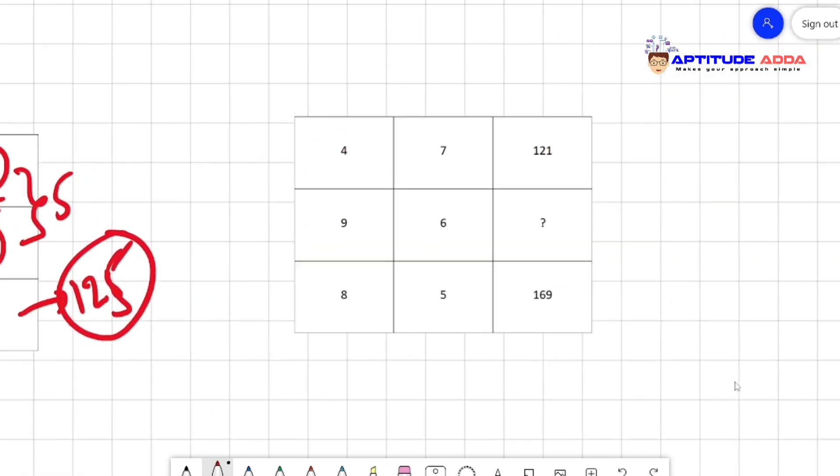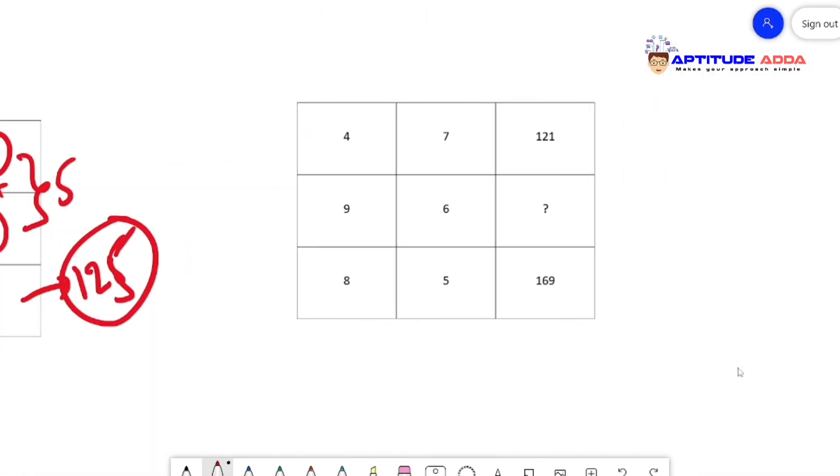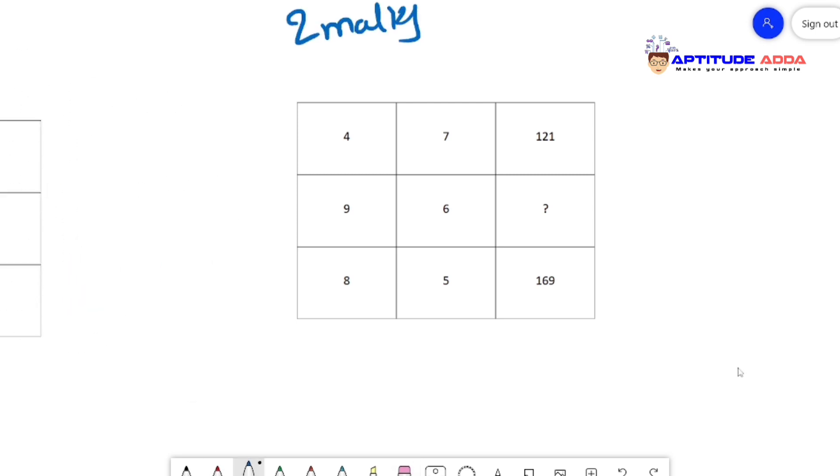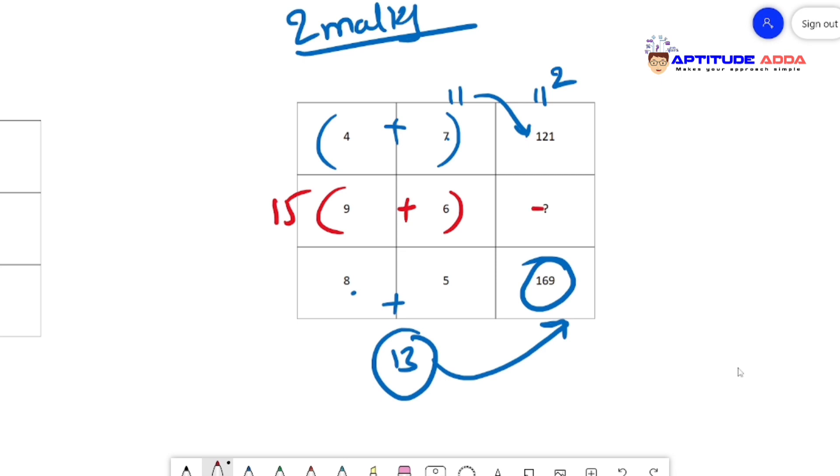Let me try the next one. Can you see the last column has perfect squares? It's a two marks question. Four plus seven gives you 11, 11 squared is 121. Similarly, 8 plus 5 is 13, 13 squared is 169. So it's very simple - 9 plus 6 gives you 15, and 15 squared is 225. So 225 will be the answer for this question.